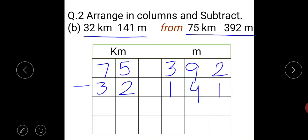Now subtract the units. 2 minus 1 is 1. 9 minus 4 is 5. 3 minus 1 is 2. 5 minus 2 is 3. 7 minus 3 is 4. So answer is 43 kilometre, 251 metre.